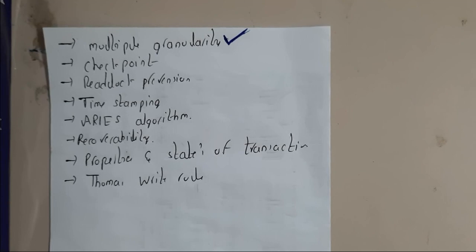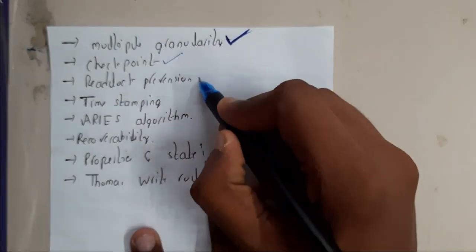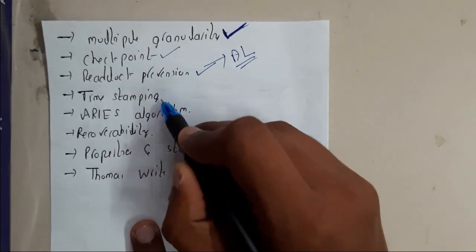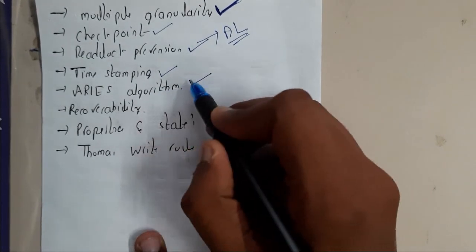So checkpoints, we have discussed about them. Deadlock prevention - basically go through deadlocks, those are really important. And time stamping, ARIES algorithm, this is an important topic.